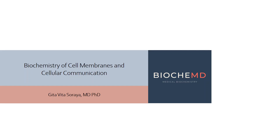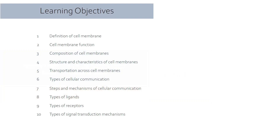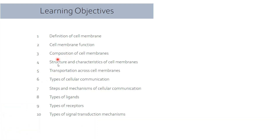In today's lecture we'll be talking about the biochemistry of cell membranes and cellular communication. Our learning objectives include: what a cell membrane is, why we need one, what its functions are, what molecules make up the cell membrane, how solutes and solvents are transported across cell membranes, and finally how cells communicate with each other and intracellularly.